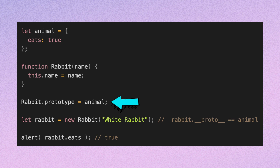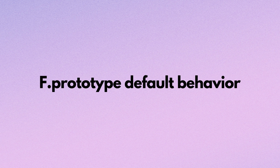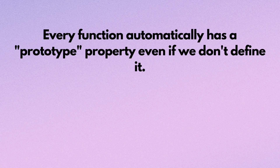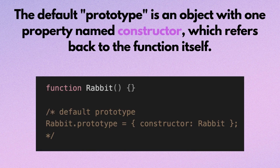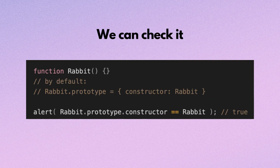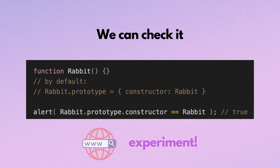When you set rabbit.prototype equal to animal, it means whenever a new rabbit is created, its prototype will be animal. Every function automatically has a prototype property, even if we don't define it. The default prototype is an object with one property named constructor, which refers back to the function itself. We can check it — it's a bit tricky, so please read it over again, then open your Google Chrome console and experiment with it until you understand. It's really important.